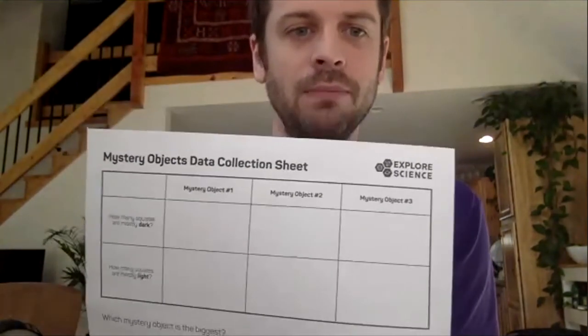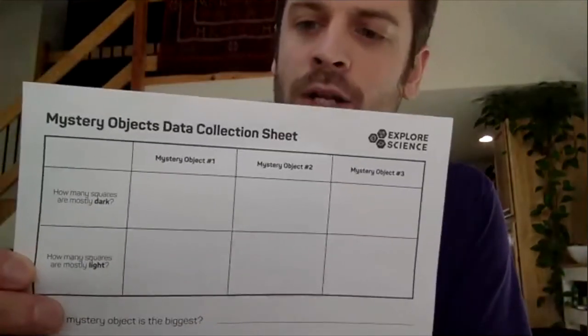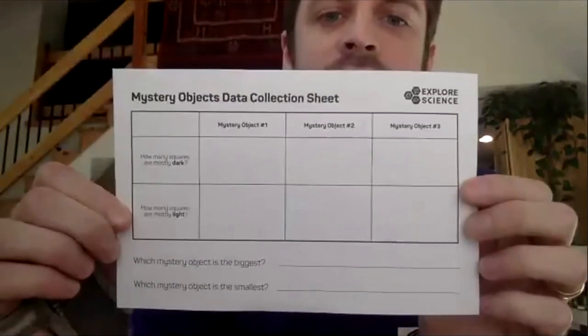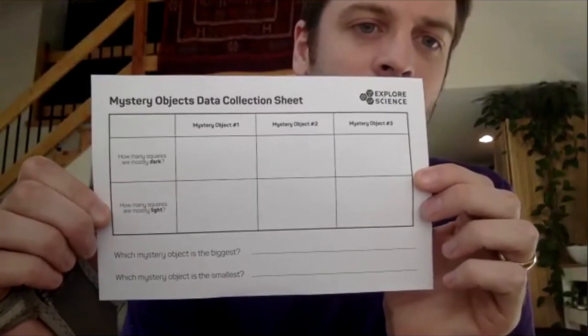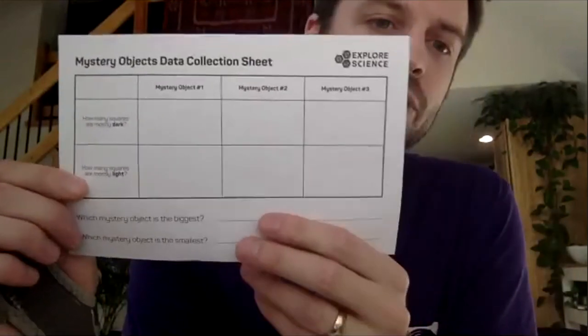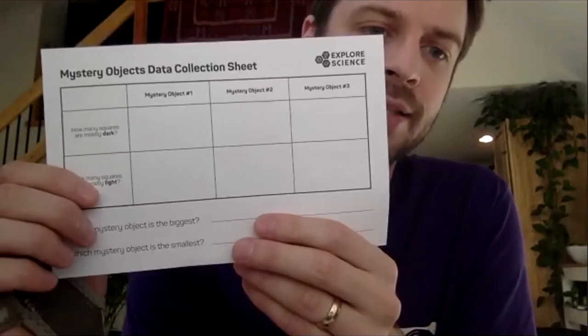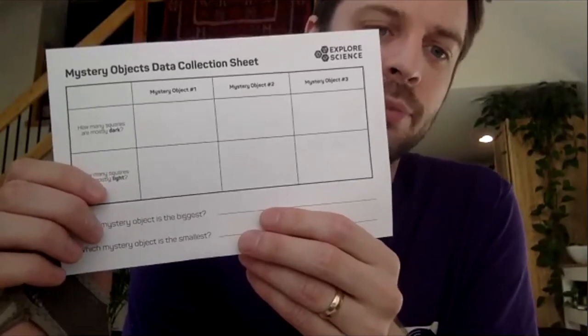You'll want a piece of paper, or if you can, you can print out a data sheet that we may have shared — I'll post it in the chat again. If you don't have that, that's totally okay. What you'll want is something to write with and a piece of paper, and you'll want to make a total of six boxes in two rows, just like this.